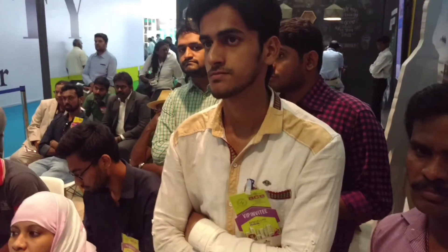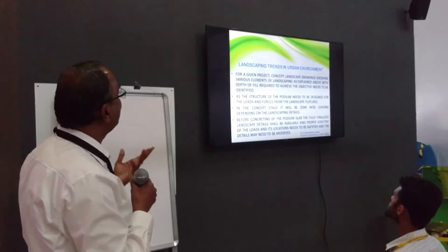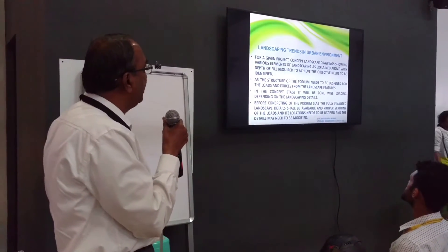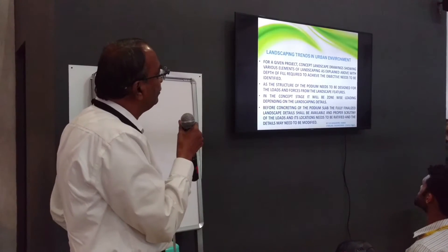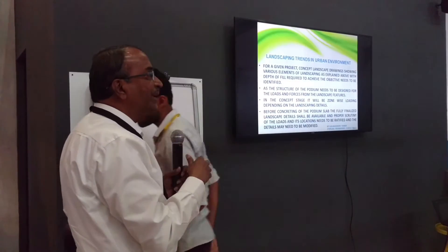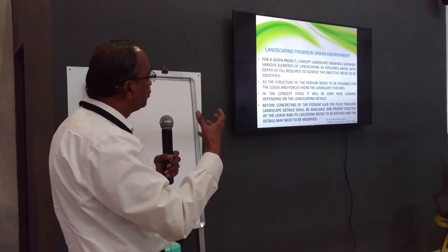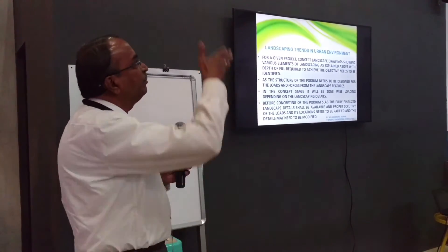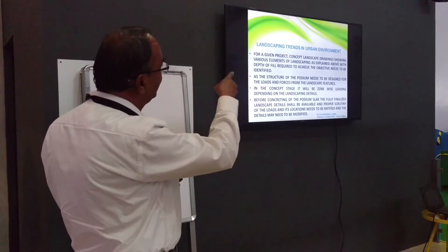That is where the urban environment comes into picture. If it was on grade or natural earth, all the problems would be very simple. Whereas on a slab, given a concept landscape drawing showing various elements with the depth of fill required to achieve the objectives, all need to be identified. If it is just plants, maybe 300–350mm of fill is okay. If there are larger plants, you specify whether it is 700mm or 600mm of earth fill. Where a mural wall is 5 meters high, we need to figure out how to anchor it to the slab.